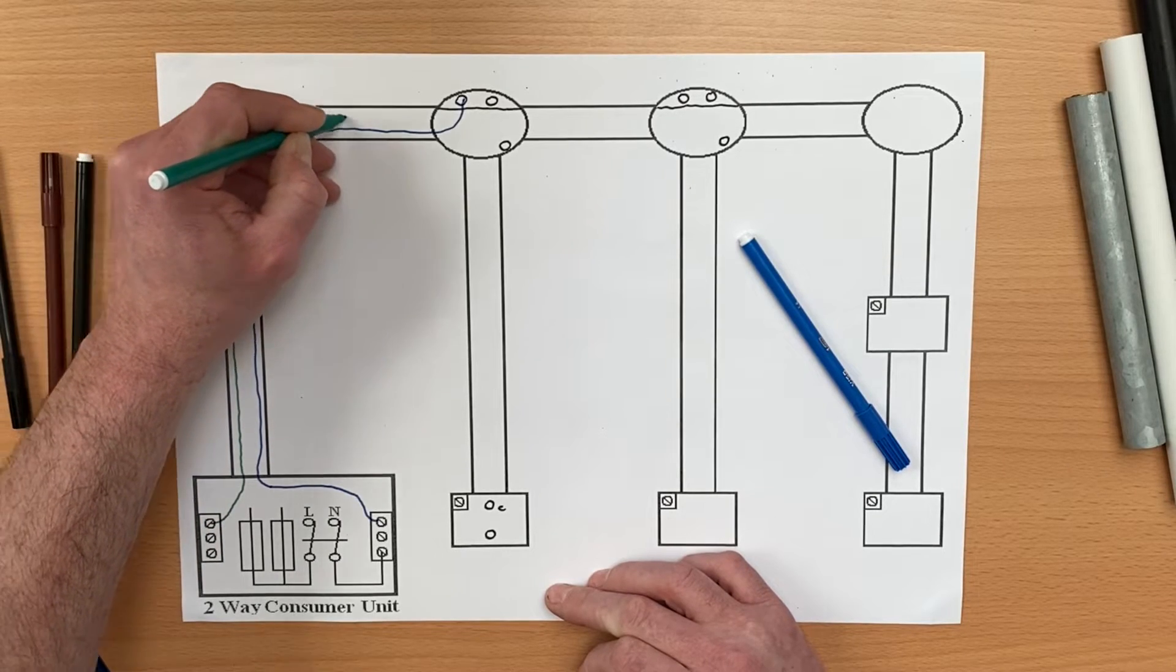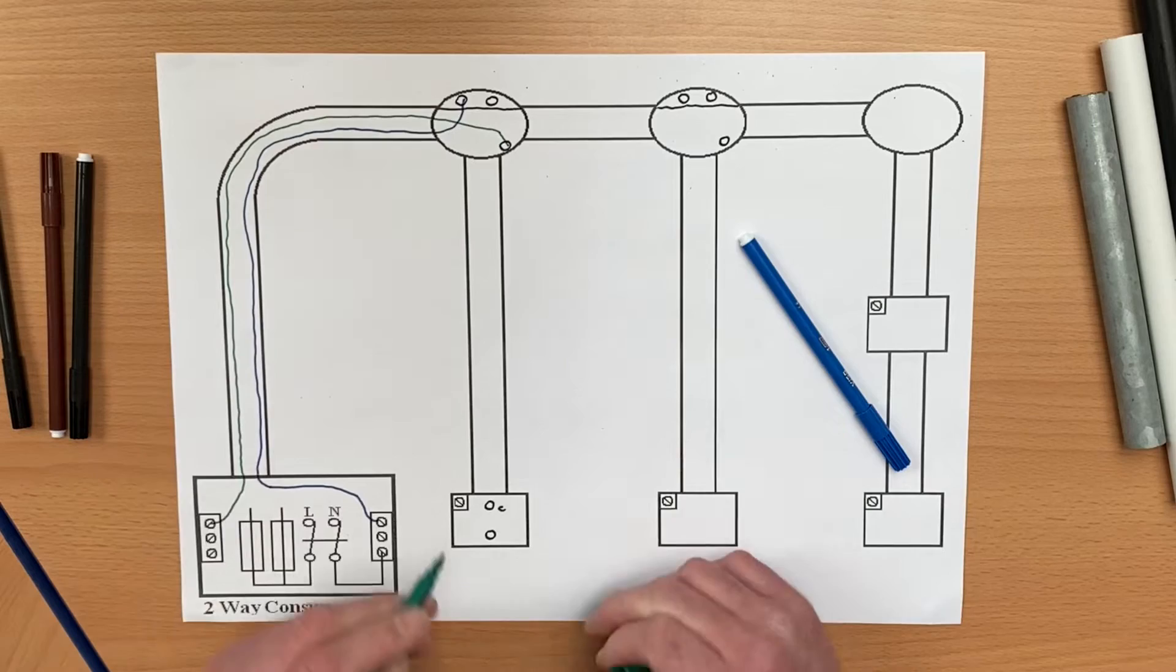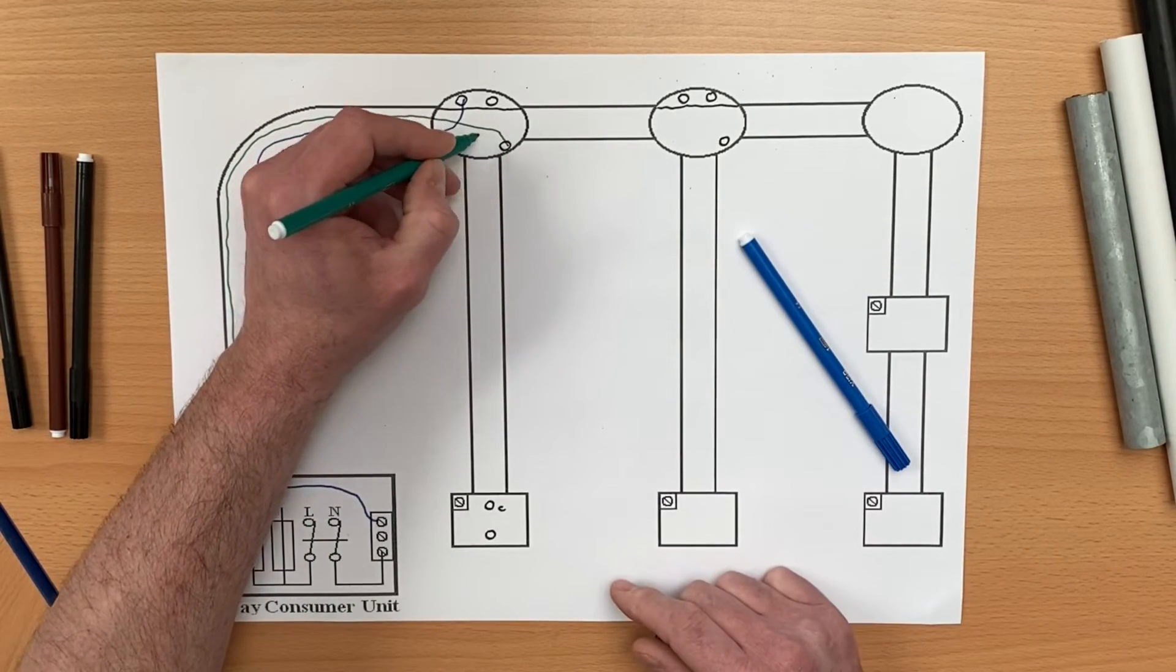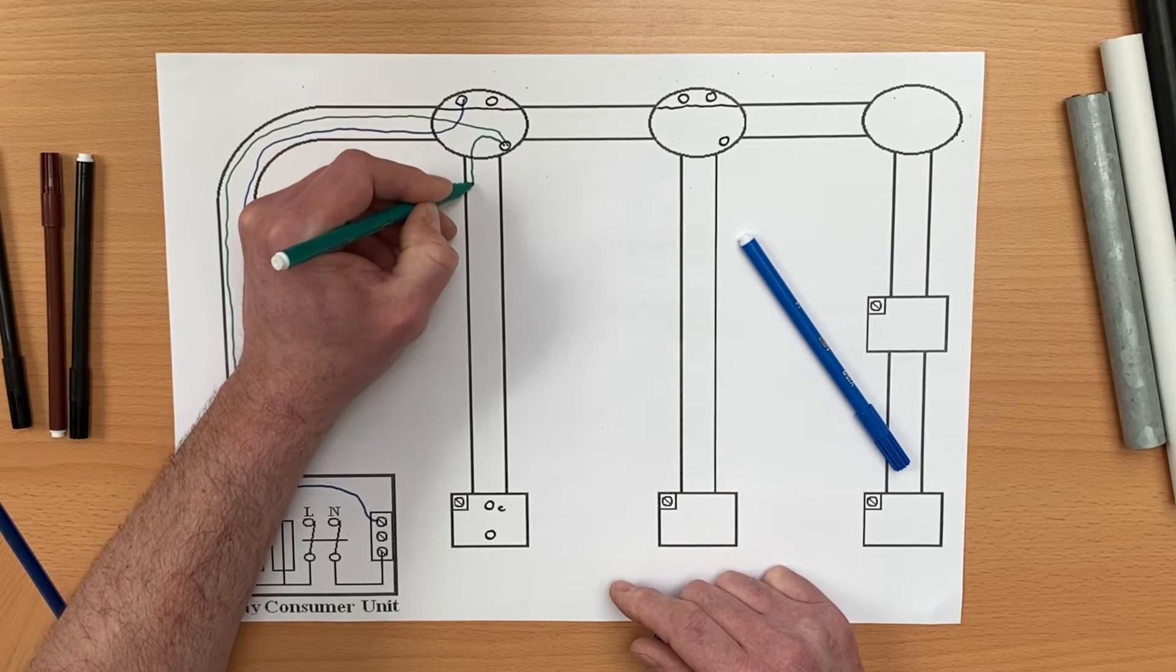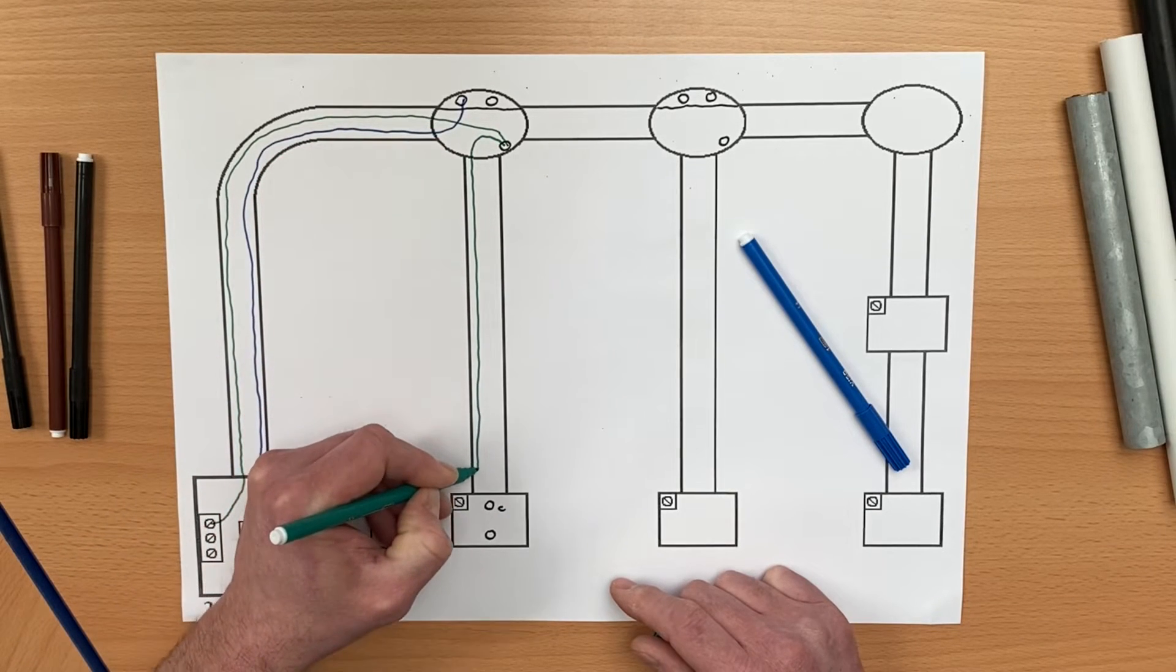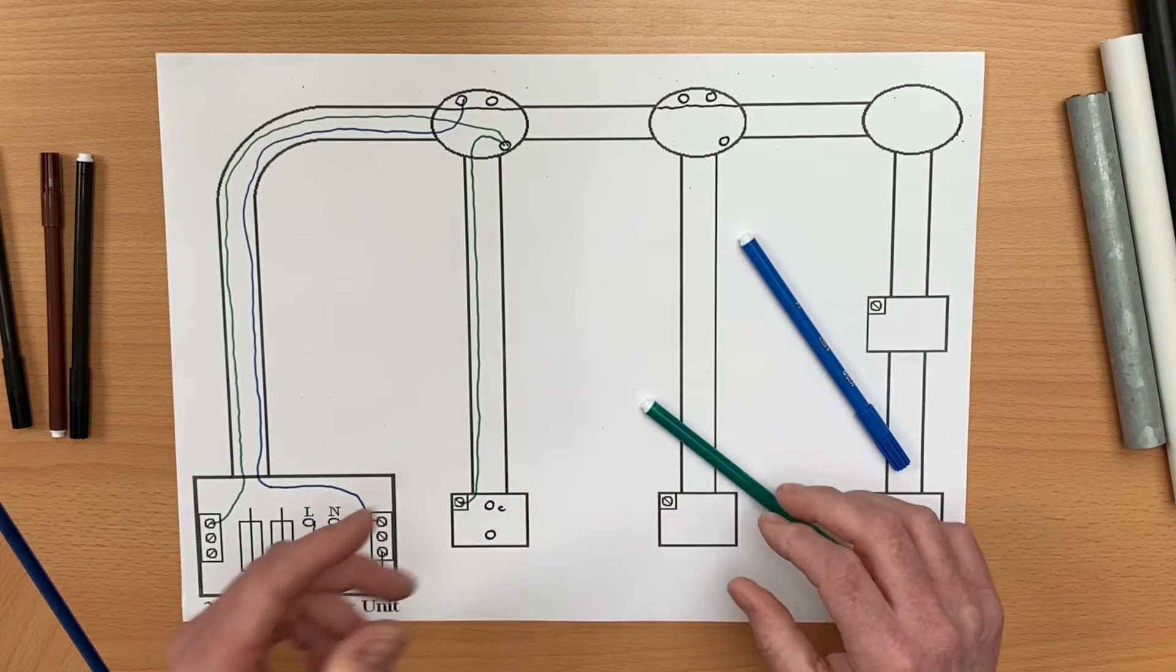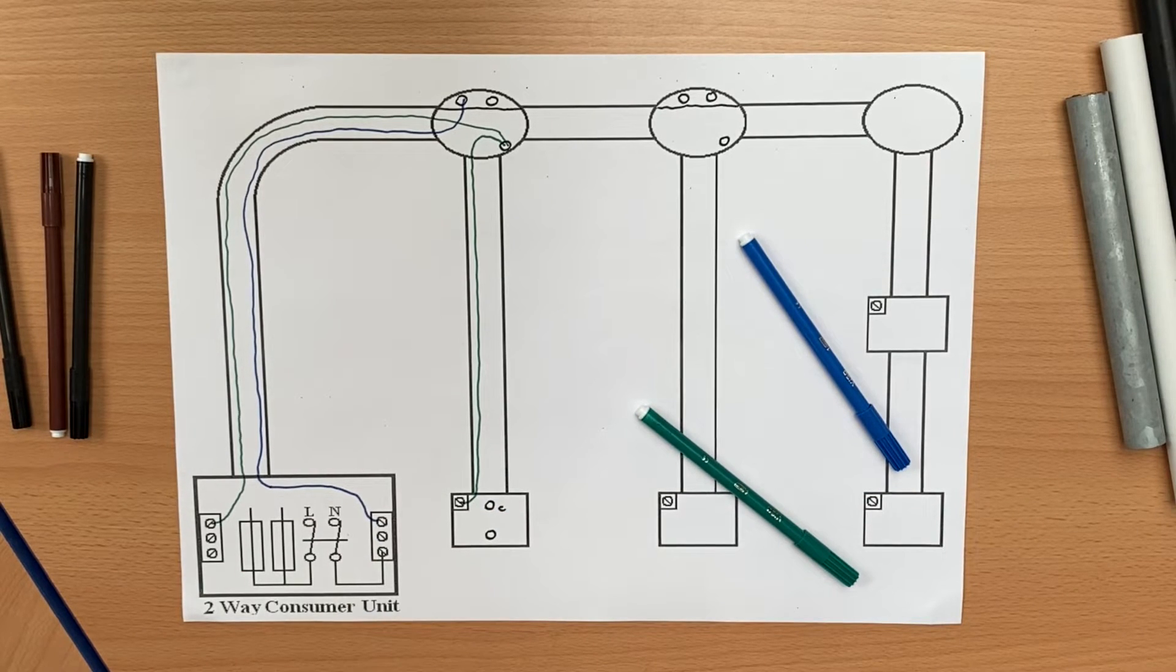Let's do the CPC next. We're going to come out of CPC, out the earth terminal in position number 1, and I'm going to drop that off first into my light fitting, in our case batten lamp holder, and then take a separate CPC down to the switch itself. So there we go, our CPCs have gone round.